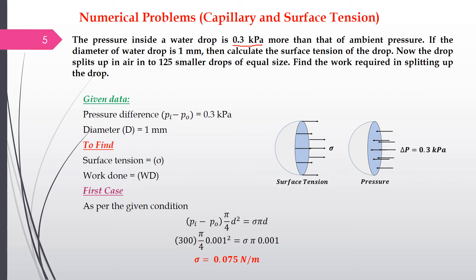In the second part, the drop splits up into 125 smaller drops of equal size. We have to find the work required to split the drop, because when the drop splits, new surfaces are formed — there is an increase in surface area — and work is done in forming those new surfaces.